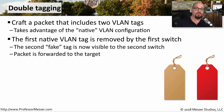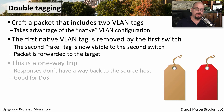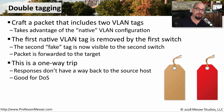This double tagging attack uses two different switches. The first switch removes the first tag associated with the frame, and the second switch removes the second tag and forwards the data to the separate VLAN. This attack can only work in one direction — there's no way to put two tags on the return frame. So you're sending information without ever receiving a response back from the other device. This limits what you can do with the attack, but it could certainly be used for something like a denial of service.